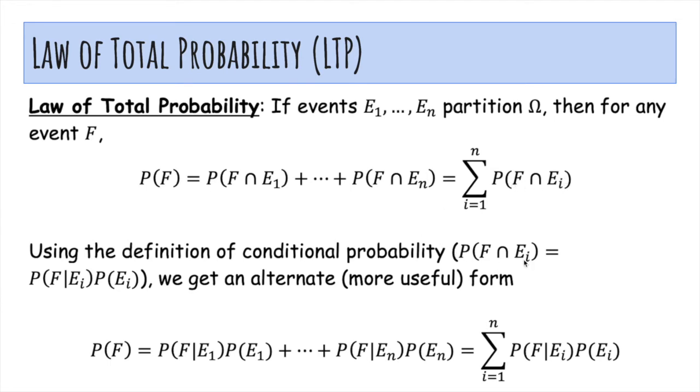Using the definition of conditional probability that we had earlier, we can actually write it like this. So what does this formula even mean?